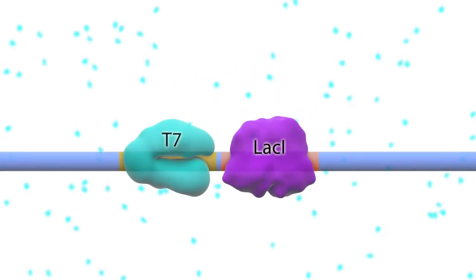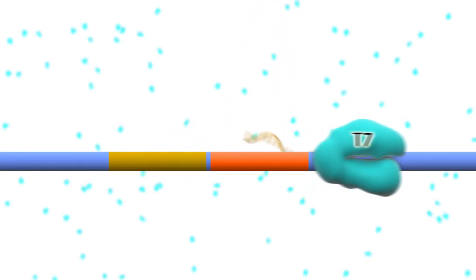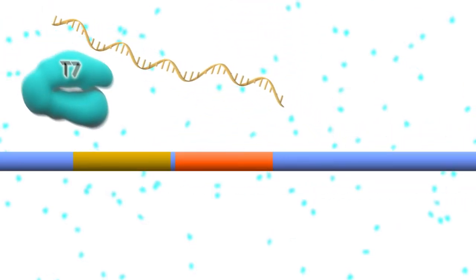Because IPTG is not hydrolyzed by beta-galactosidase, it reliably allows protein expression to proceed when added to E. coli cultures.